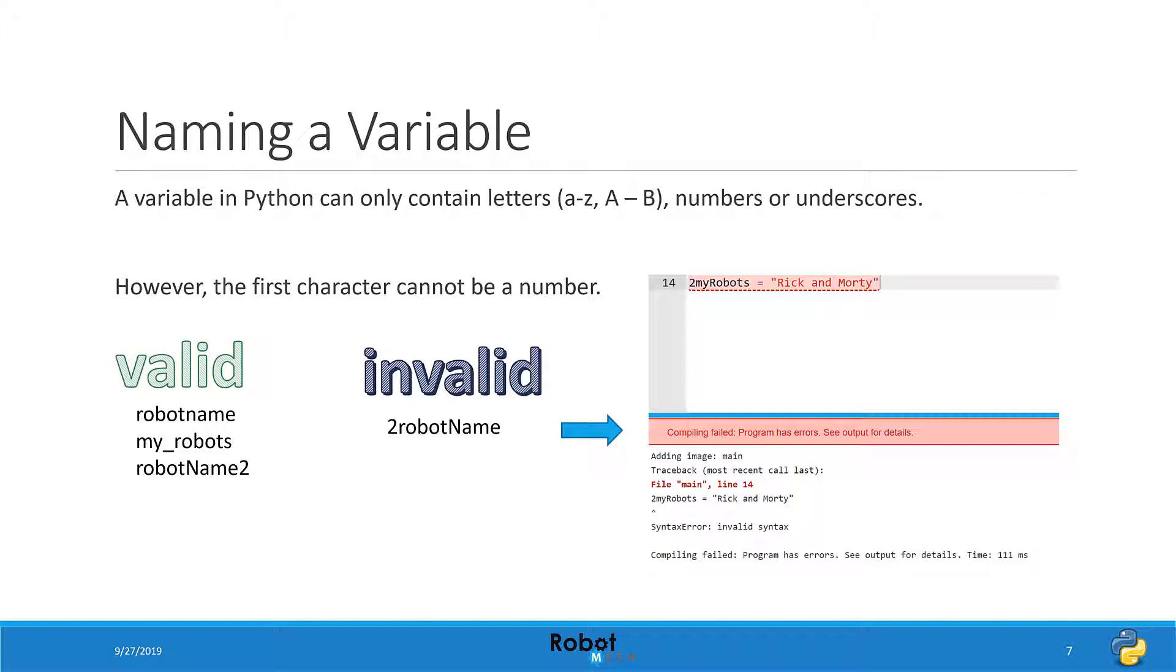On the right-hand side, though, we see a variable called 2 robot name, which will throw an error when executed by the Python interpreter because it starts with a number.